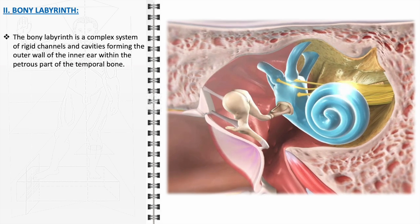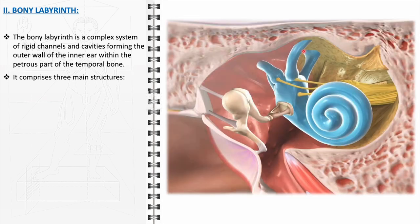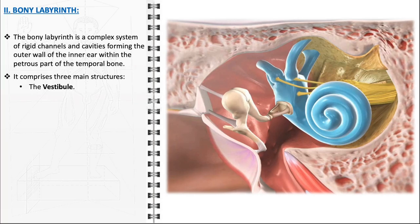The bony labyrinth, an integral component of the inner ear, is a meticulously structured system of rigid channels and cavities situated within the petrous part of the temporal bone. Comprising three main structures, the bony labyrinth is a marvel of anatomical design. The first of these structures is the vestibule, which is the central part of the labyrinth. The vestibule acts as the entryway to the other components and contains two important sacs — the utricle and the saccule — which are part of the membranous labyrinth and play a crucial role in balance and spatial orientation.